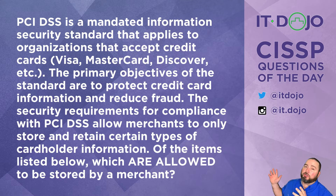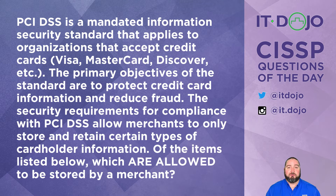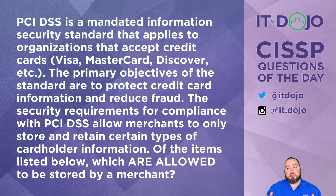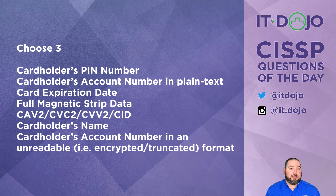Okay, question number one — a lot of words, so I'm going to paraphrase. Click pause if you need to read it. PCI DSS is a mandated information security standard targeted towards people who accept credit cards — Visa, MasterCard, Discover, etc. The primary purpose of PCI DSS is to protect customers' credit card information and to reduce and prevent fraud. Which of the following items per PCI DSS are allowed to be stored by the merchant?